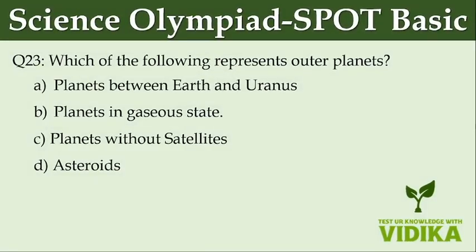Which of the following represents outer planets? Option A: Planets between Earth and Uranus. Option B: Planets in gaseous state. Option C: Planets without satellites. Option D: Asteroids.